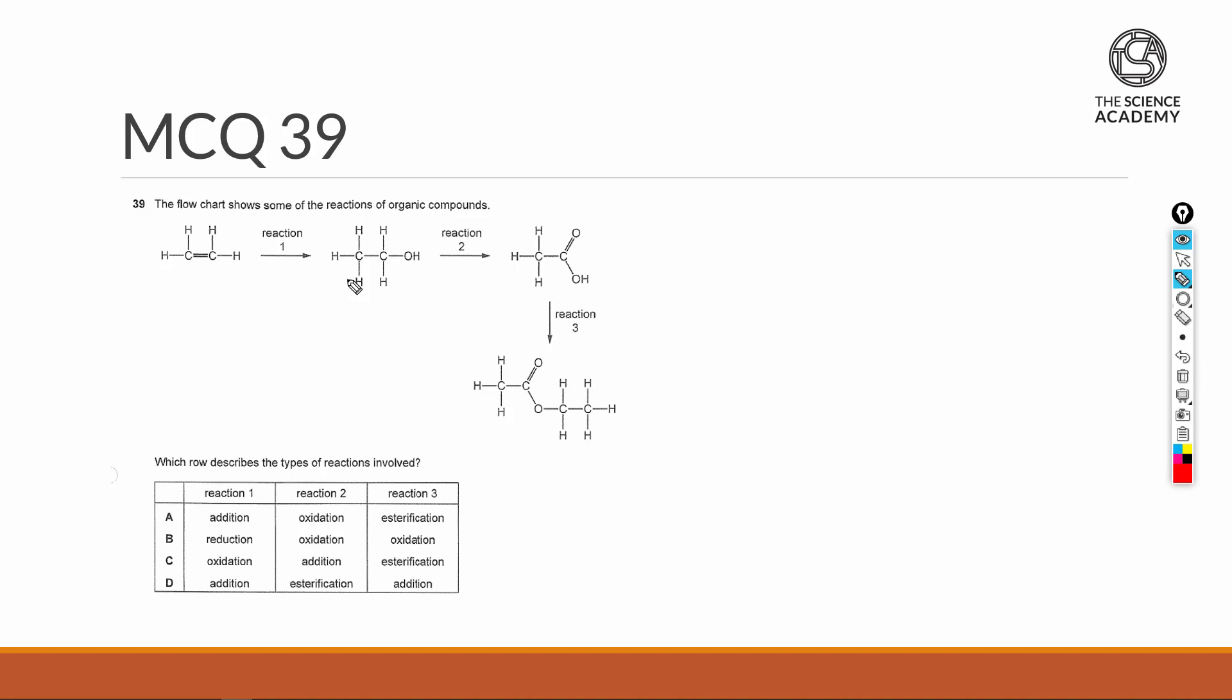MCQ39 has a bit of a QA style together with organic chemistry where we take a look at the reactants and products and try to guess reasonably the kind of reaction that's happening. Our advice for questions like this: we take a look at all the functional groups first.